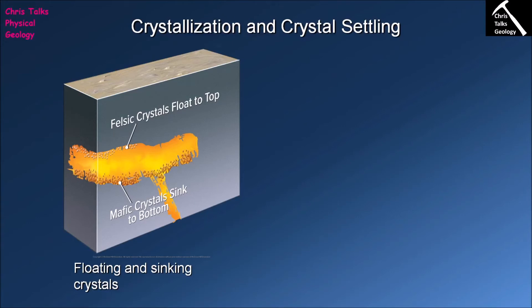Are there other factors which affect the composition of our magma or the rocks that form from it as it cools? When our magma crystallizes in a magma chamber underground, it cools slowly, forming nice large crystals. As crystals begin to form, they will either be denser than the magma — in which case they sink — or less dense than the magma, in which case they float.